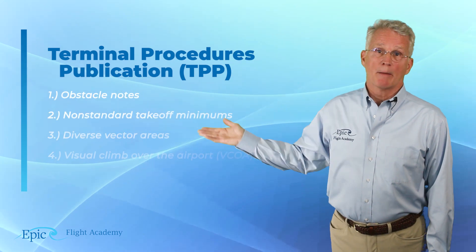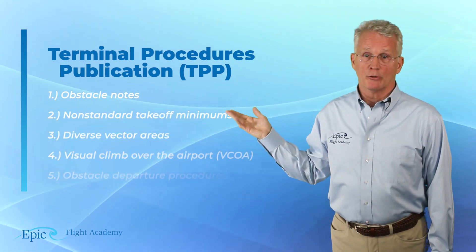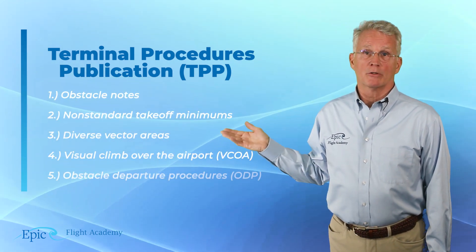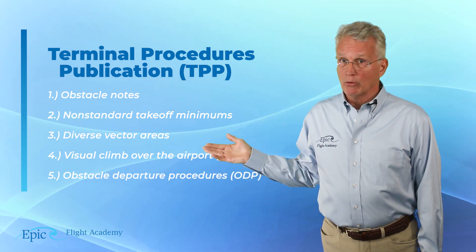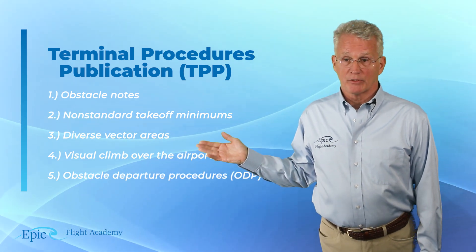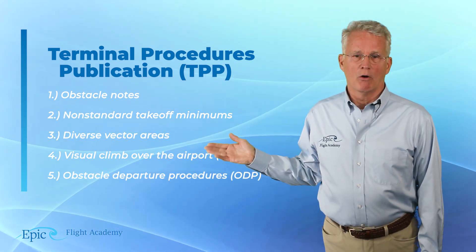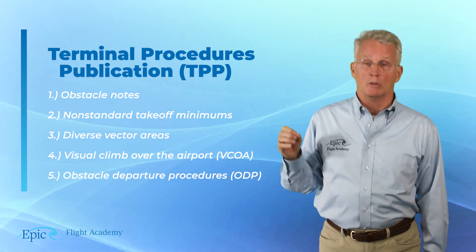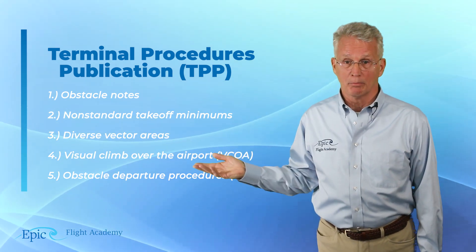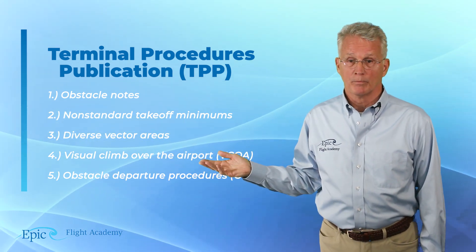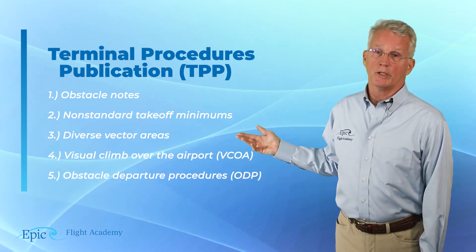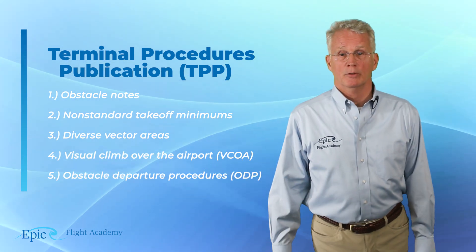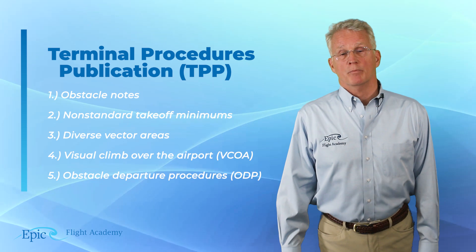Here are the five conditions: there may be obstacle notes, non-standard minimums, diverse vector areas, a VCOA — that's a visual climb over the airport — or finally, an ODP, which is an obstacle departure procedure.